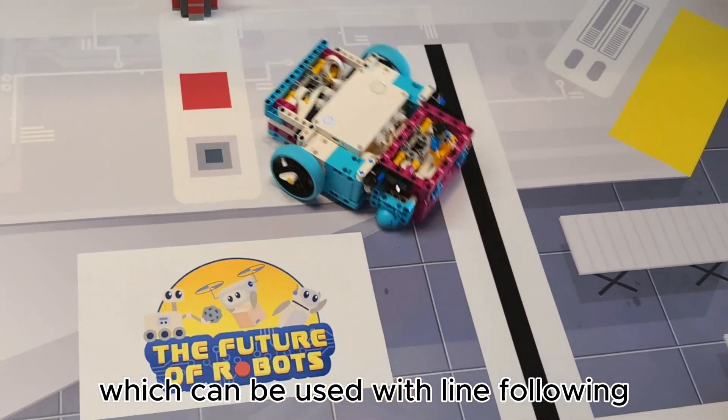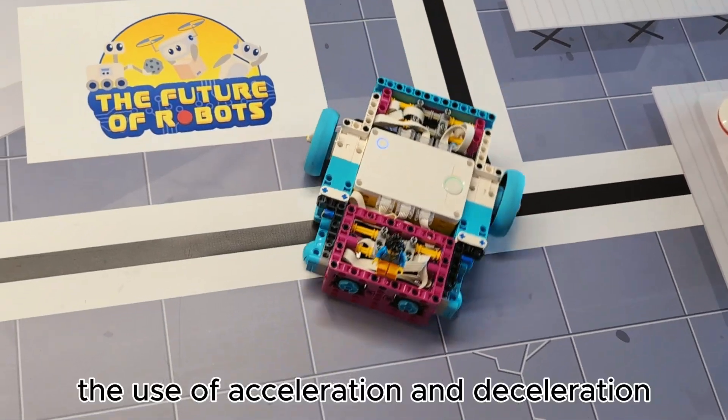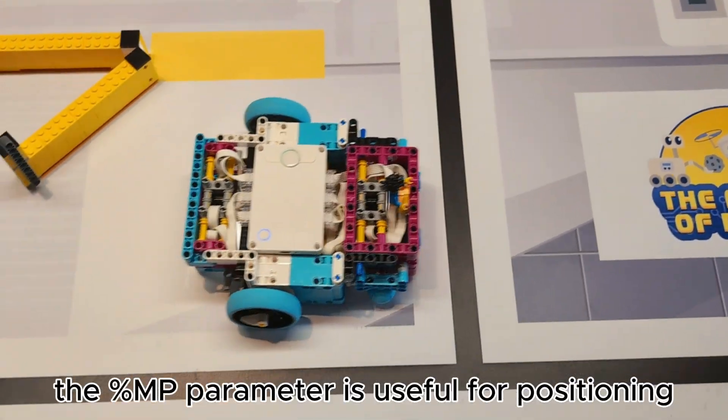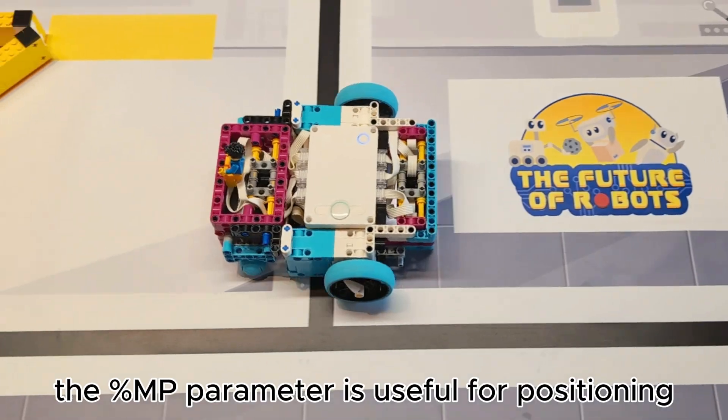Well that was the universal turn which can be used with line following or yaw following. The use of acceleration and deceleration should give a more accurate turn. The %MP parameter is useful for positioning.